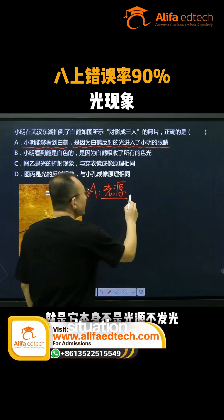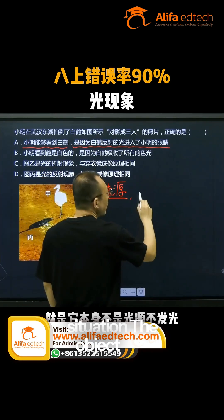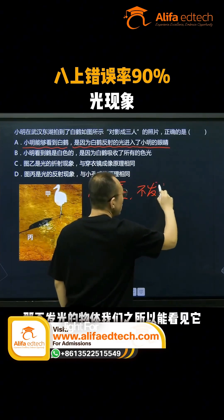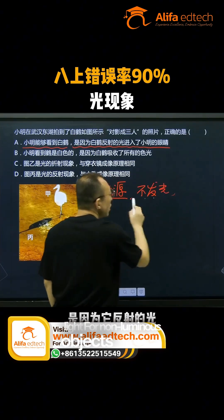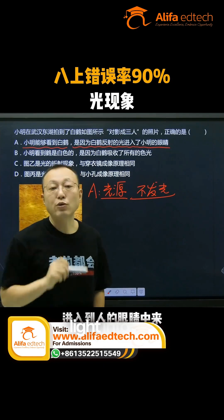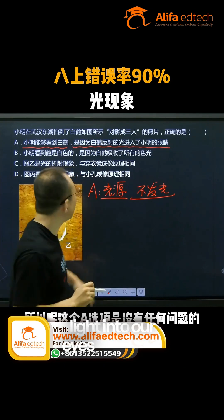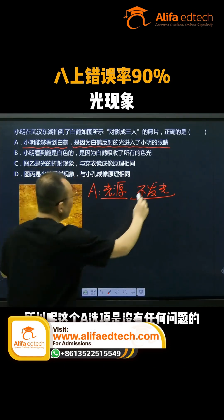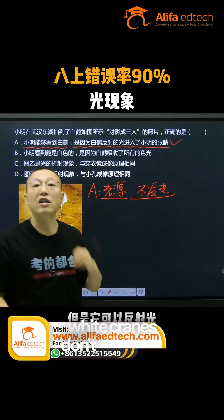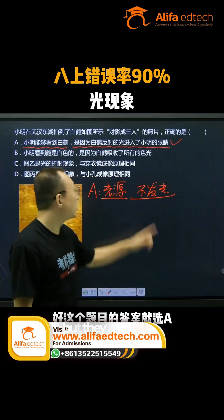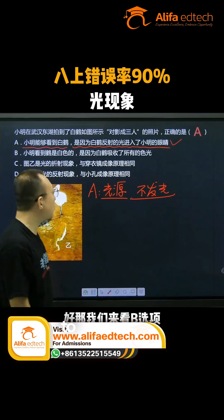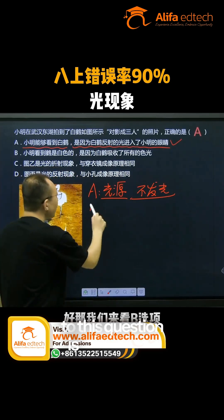In the second situation, the object isn't a light source — it doesn't emit light. For non-luminous objects, we can see them because they reflect light into our eyes. So option A is correct, since white cranes don't emit light but they can reflect light. The answer to this question is A.